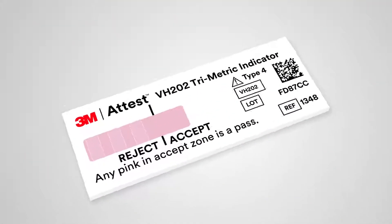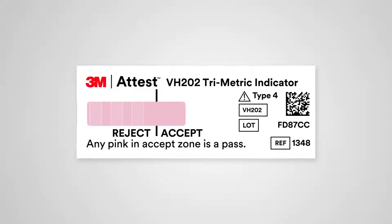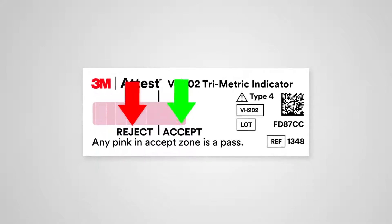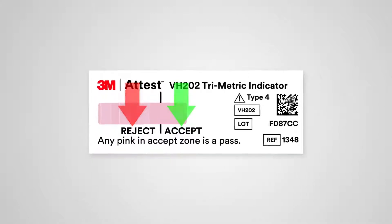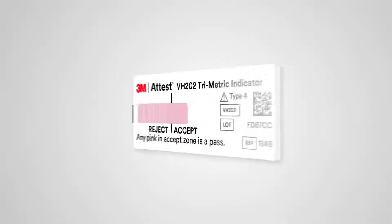The 3M A-Test Trimetric CI also has clearly labeled Accept and Reject Zones for interpretation and a distinctive backside printed with the red 3M logo, which makes it easy to find in the pack.